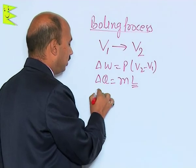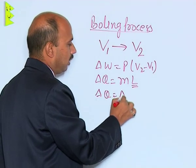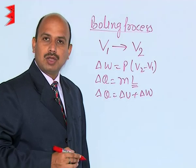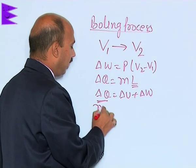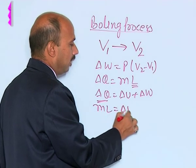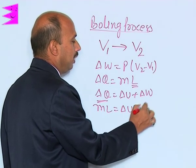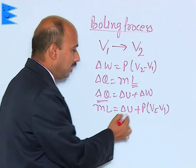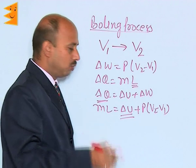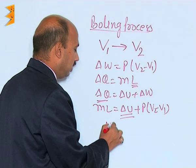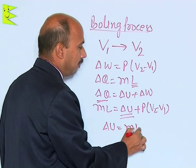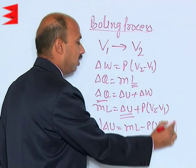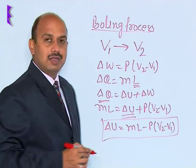So now we can write, according to the first law of thermodynamics: delta Q is equal to delta U plus delta W, which gives us M into L is equal to delta U plus P into V2 minus V1. We can then calculate the increase in internal energy: delta U is equal to M L minus P into V2 minus V1. This is the increase in internal energy for the boiling process.